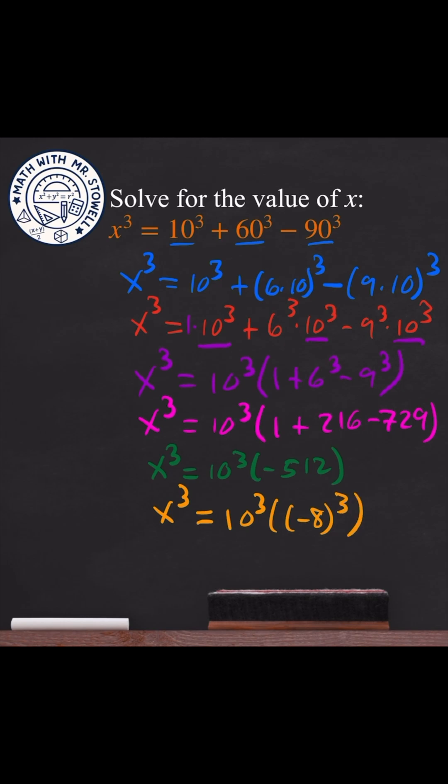To solve for x, we take the cube root. So x = 10 × (-8) = -80.